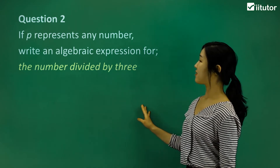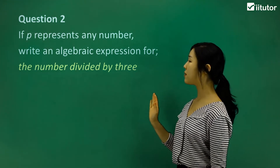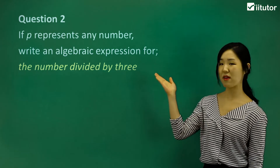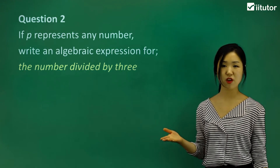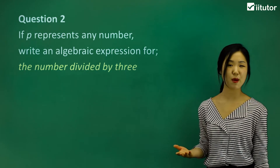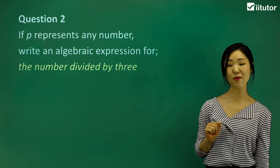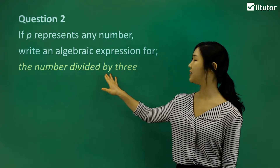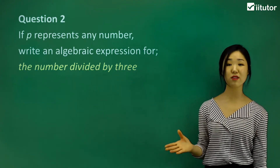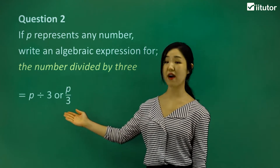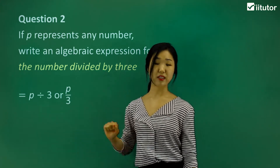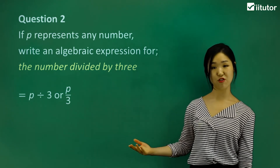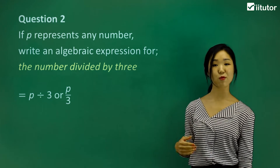Question two: if p represents any number, write an algebraic expression for the number divided by three. We're using the pronumeral p. The algebraic expression we want is the number divided by three. If the number is p and we're dividing by three, we can write it as p divided by three, but algebraically it's better to write it as p over three — the fraction implies division. So p over three means p divided by three.